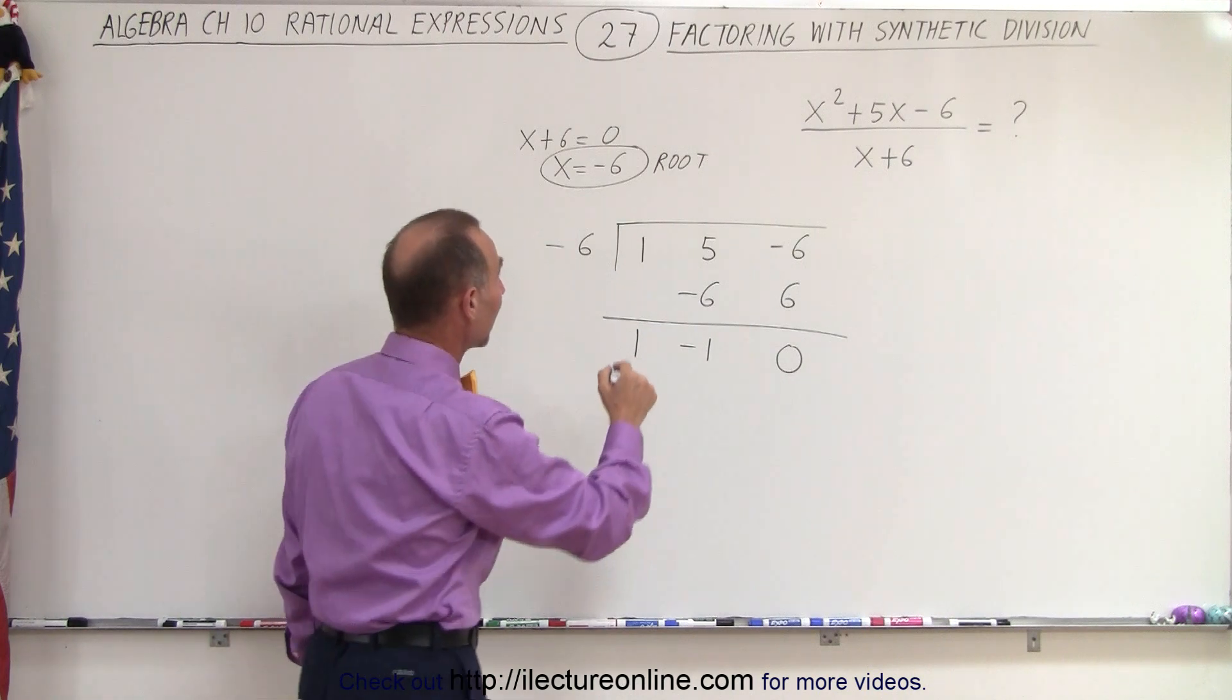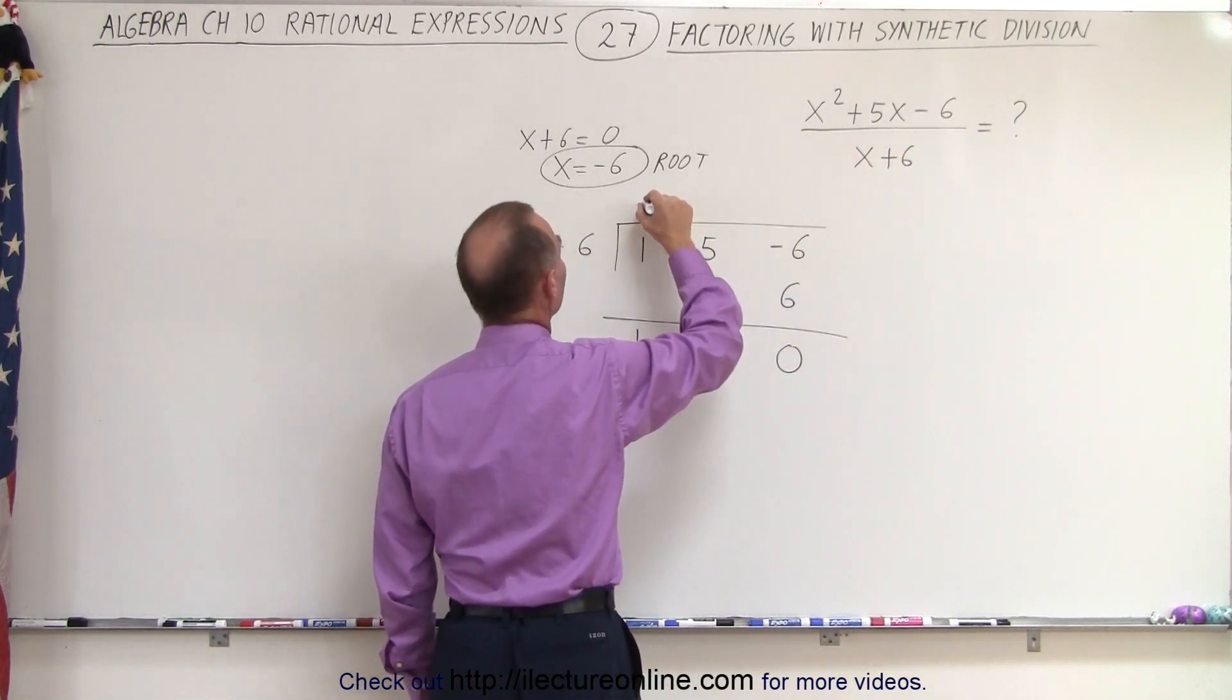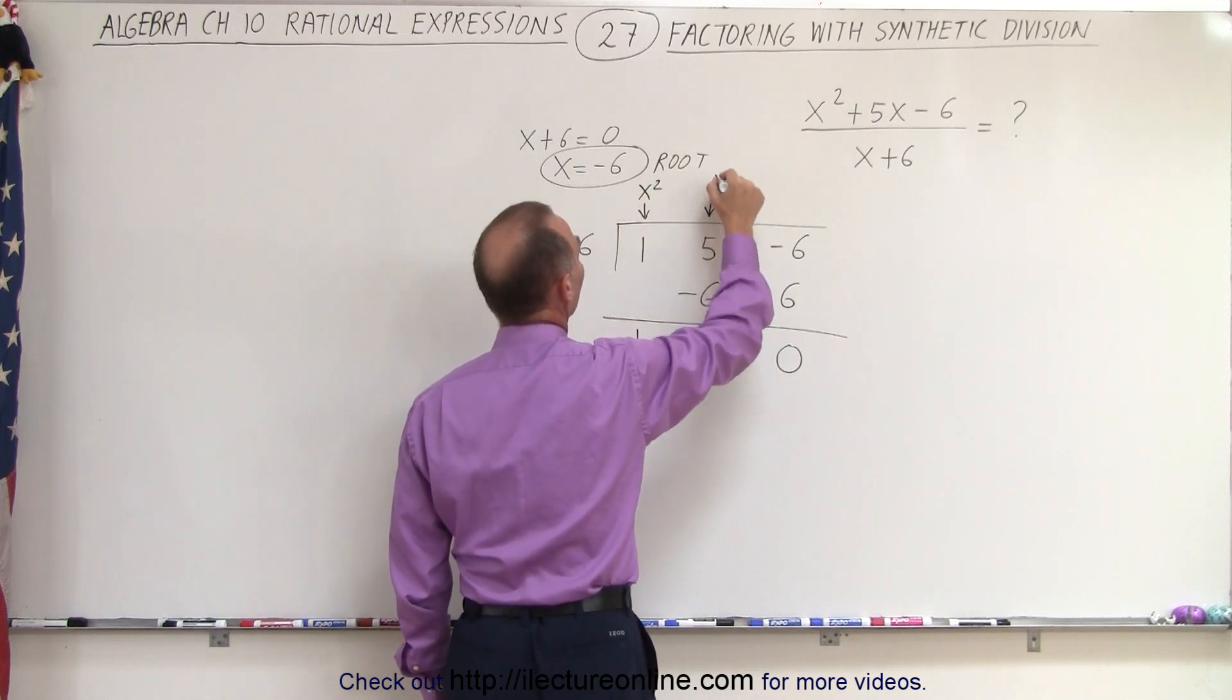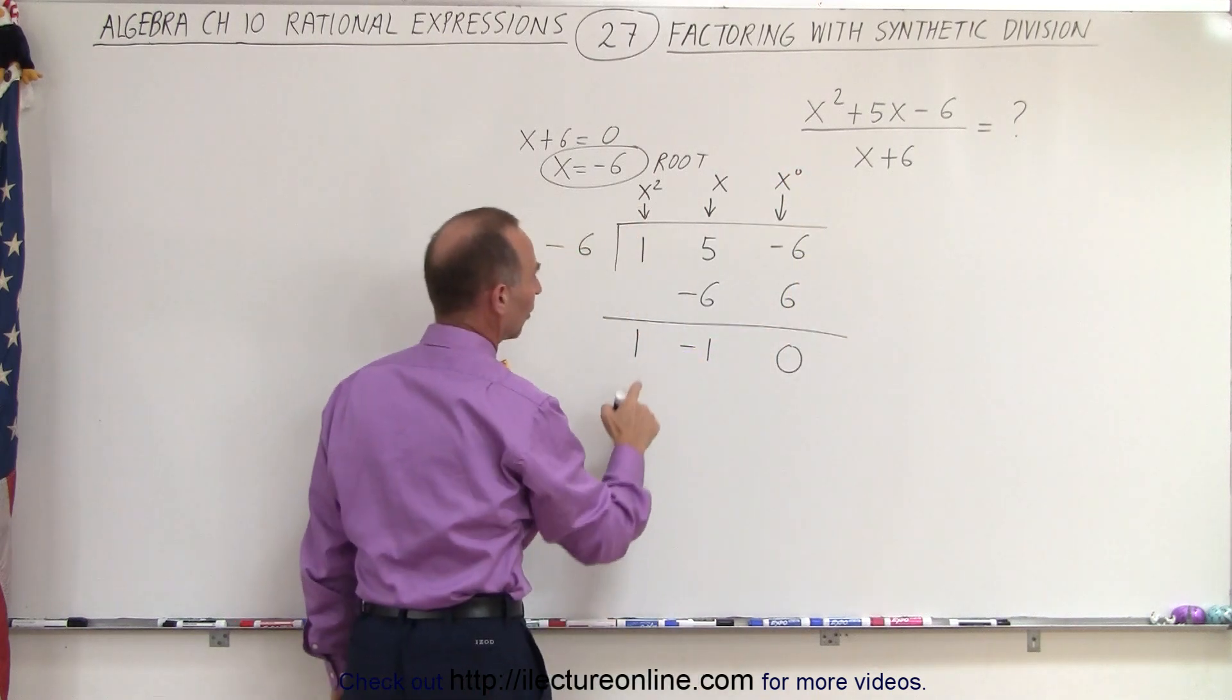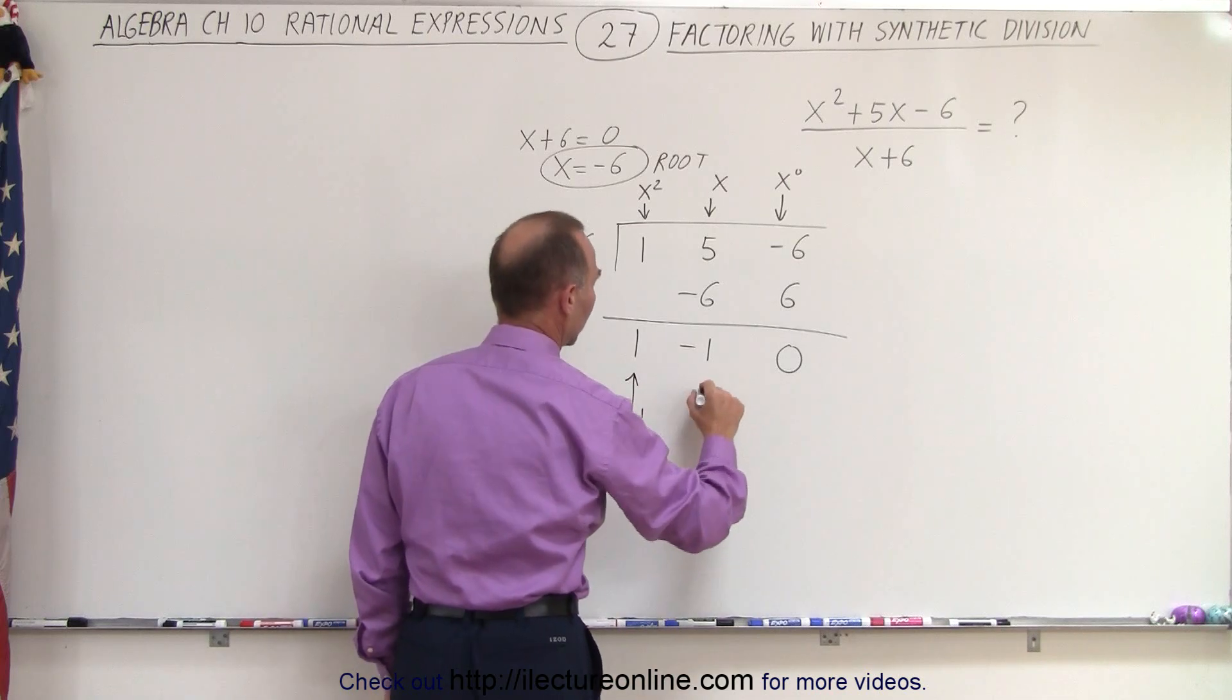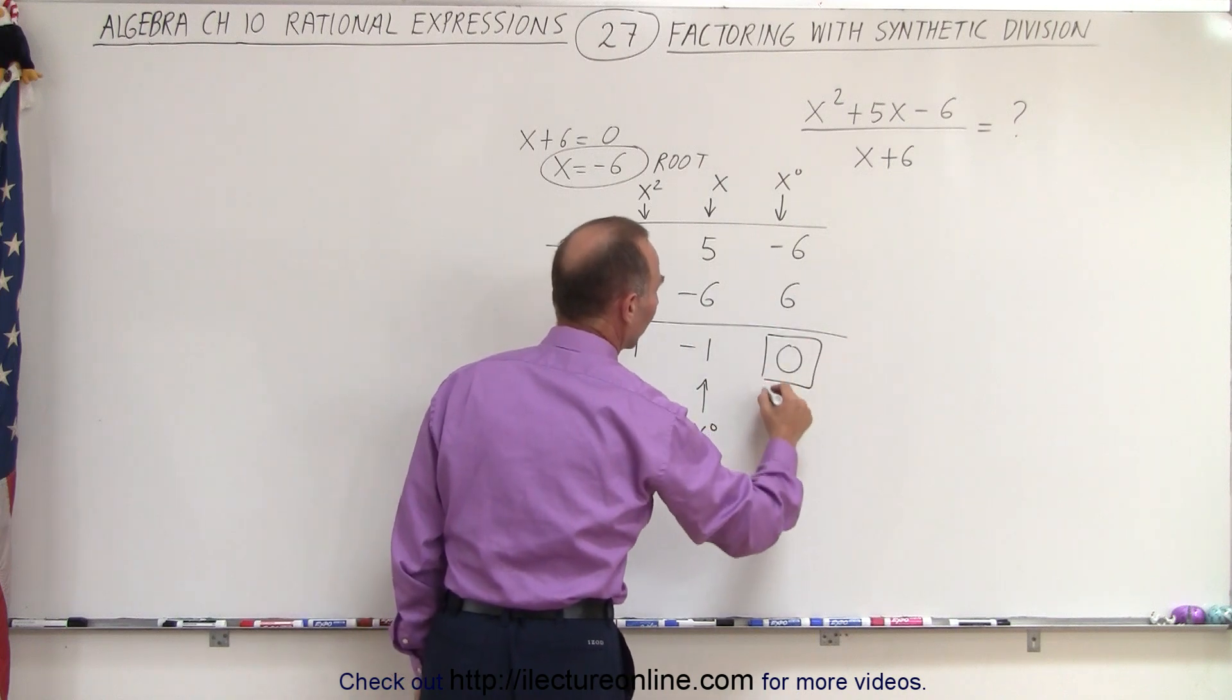Now let's see what all these numbers mean again. For the numerator, for the polynomial at the top, this is the x squared term, this here is the x to the first term and this here is the x to the zero term which is just a constant. Over here, this represents the x to the first term and this represents the x to the zero term and this here represents the remainder.